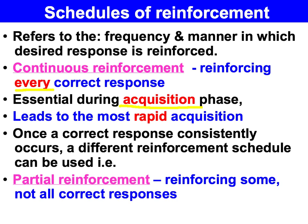So continuous reinforcement leads to the most rapid acquisition. Once the learner has made the association between their behaviour and the consequence — the operant response and the consequence — then you can go to a partial schedule of reinforcement, and there are four types.